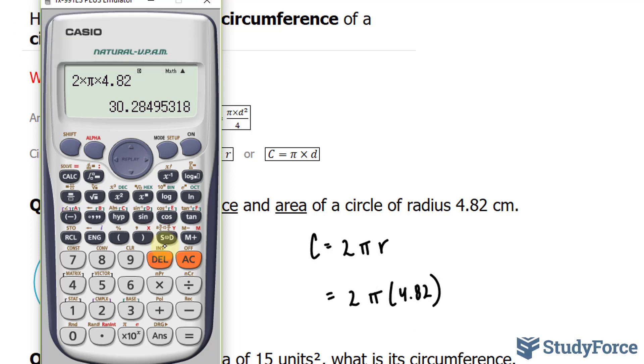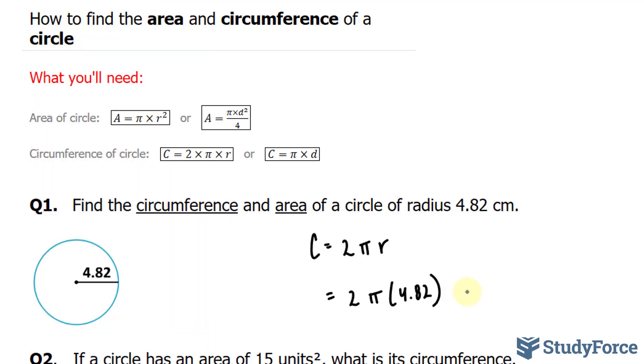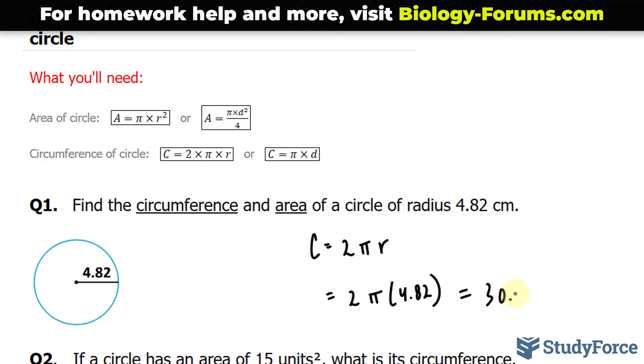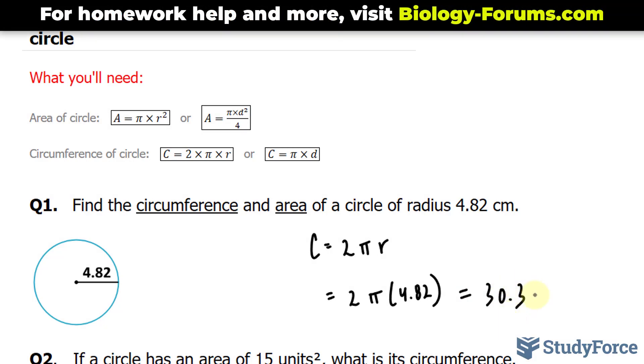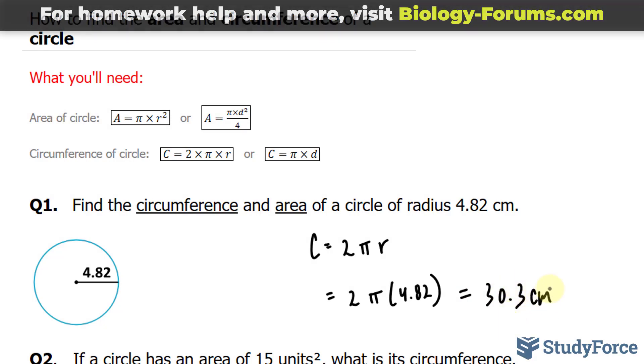Because this number has 3 significant digits, I'll stop writing after the third digit here. Following that third digit is 8, so I'll round up by 1. I end up with 30.3. 30.3 centimeters is my circumference. Now I'll move on to the area.